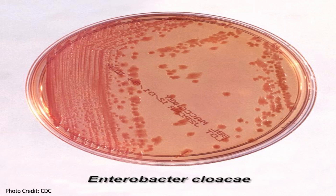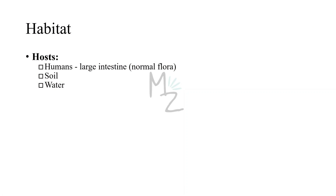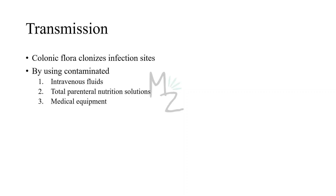Habitat: Human beings are the hosts of Enterobacter cloacae and it is part of the normal flora of the large intestine, but it can also be found in soil and water. Transmission occurs when the colonic flora colonizes infection sites, or through contaminated intravenous fluids, total parenteral nutrition solutions, and medical equipment.